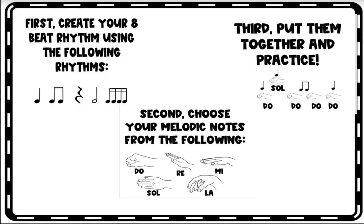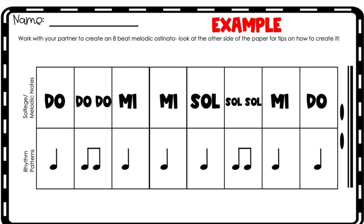After we've practiced together, students get into groups of two to create their own eight-beat melodic ostinato using a worksheet. First they create an eight-beat rhythm using rhythms they know — you can even post on the board the only rhythms you want them to use. Then they choose their melodic notes: sol, mi, or whatever they've learned up to that point in your music room. Third, they put them together and practice, with bonus points if they play it on the xylophone. They call me over once finished, sing with hand signs, and perform their eight-beat pattern. Some classes also take it to the barred instruments and perform for the class at the end — it's a super fun time.